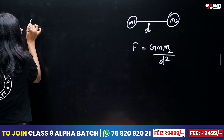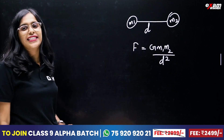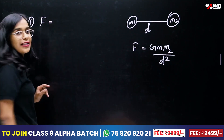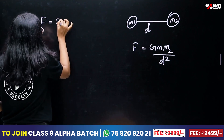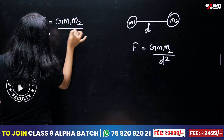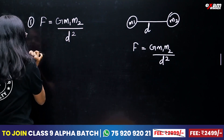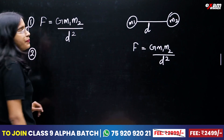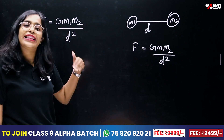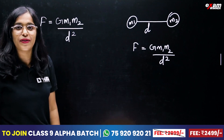In figure 1, the force of attraction is F. The force of attraction is equal to F, that is G M1 M2 divided by D squared.